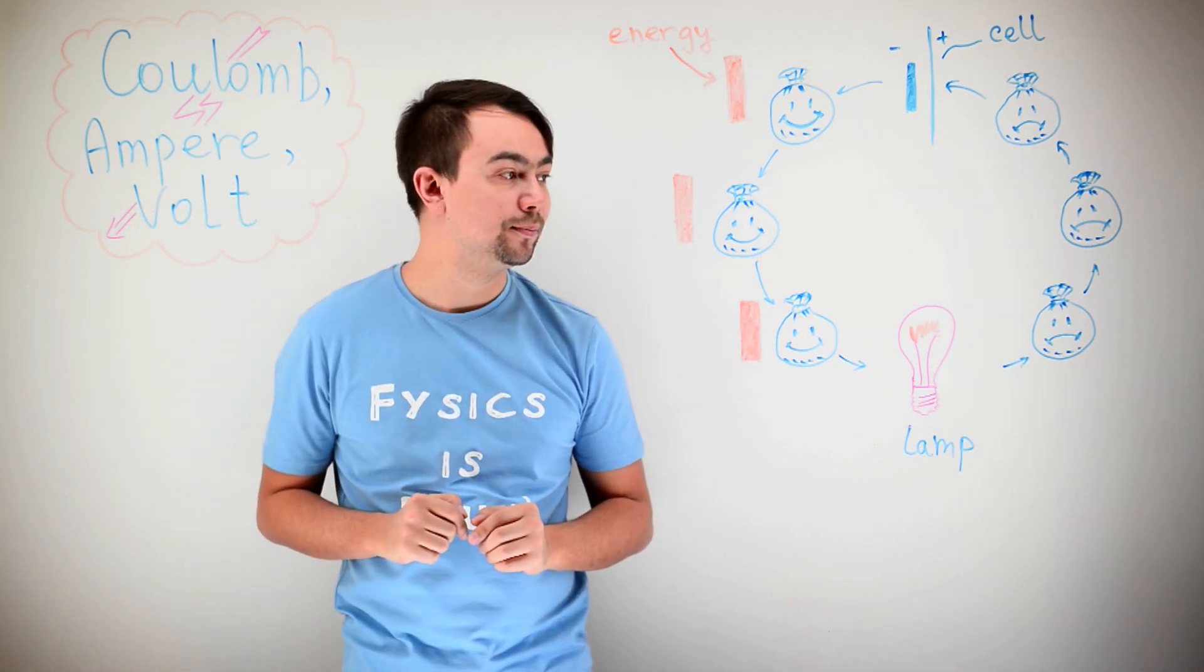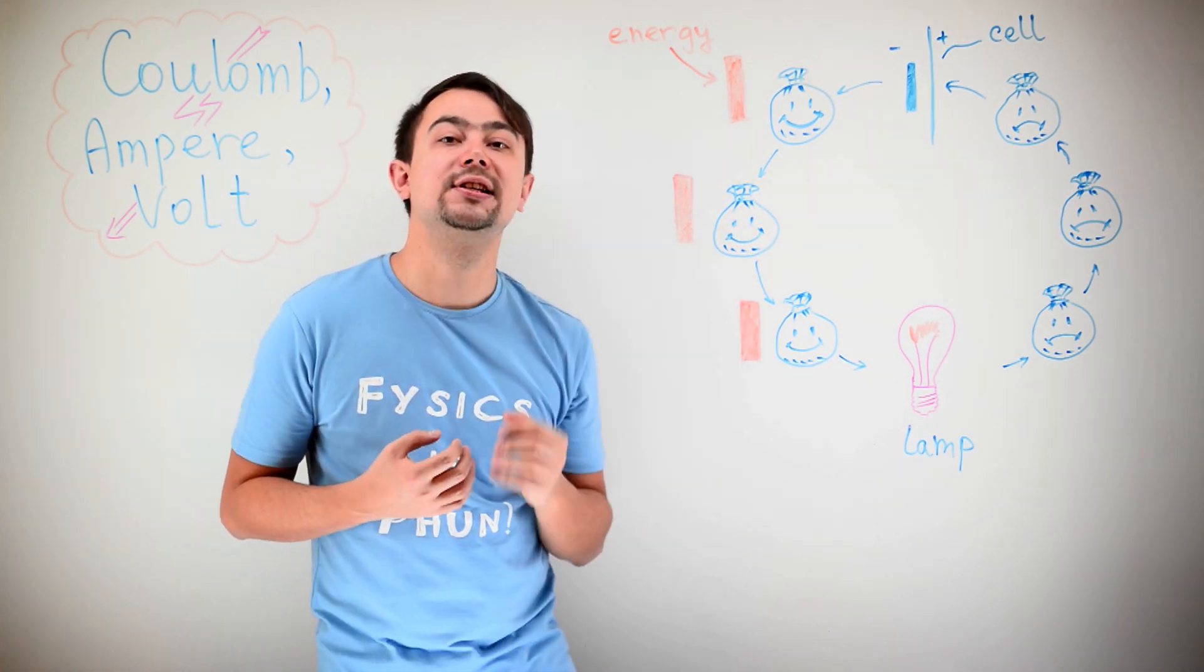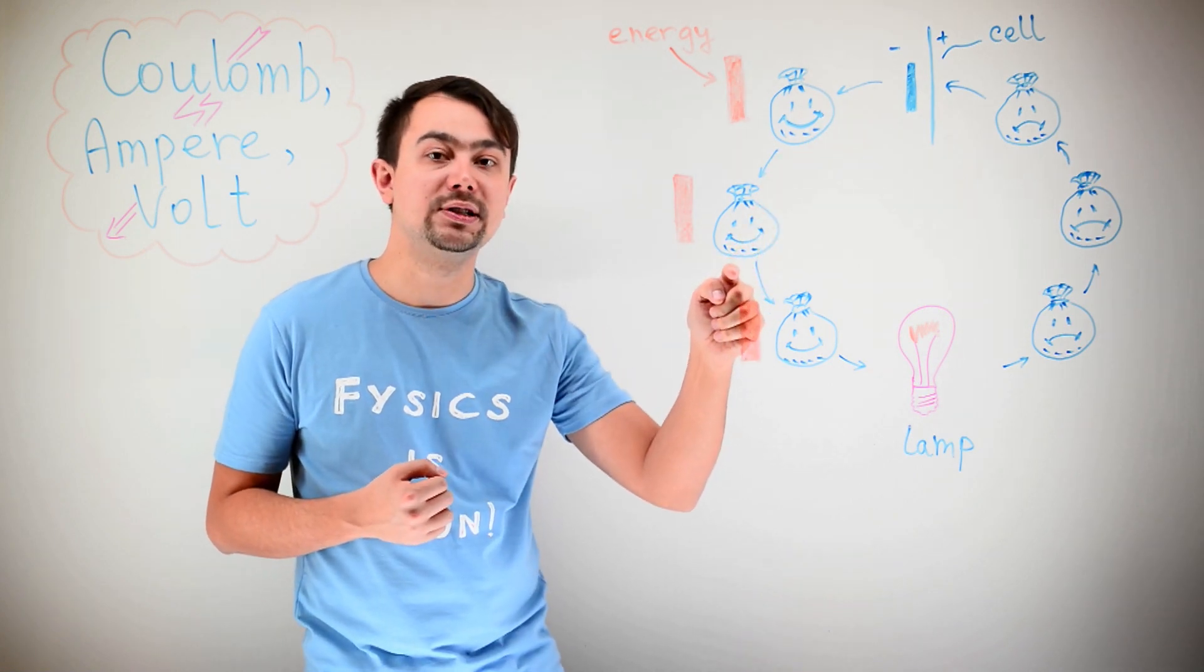Now, the Ampere. The Ampere is simply how many bags of these electrons, or how many Coulombs, flow past a point in one second.